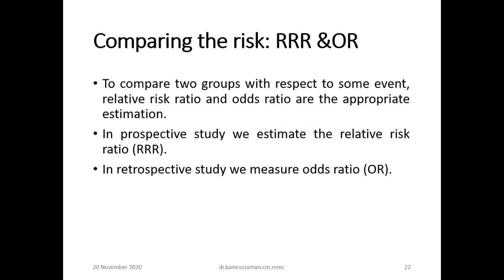To compare two groups with respect to some event, relative risk ratio and odds ratio are appropriate estimations. In a prospective study, we estimate the relative risk ratio. In a retrospective study, we measure the odds ratio.